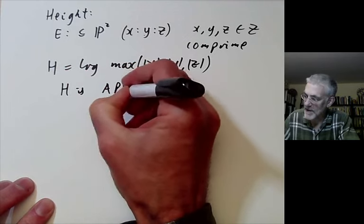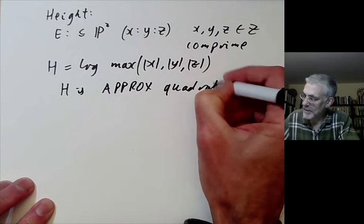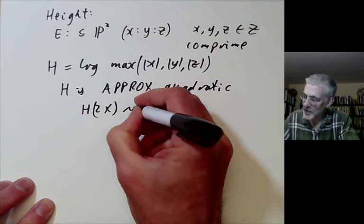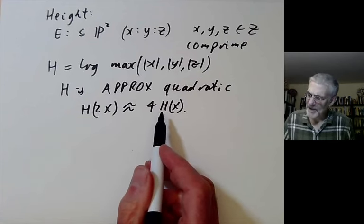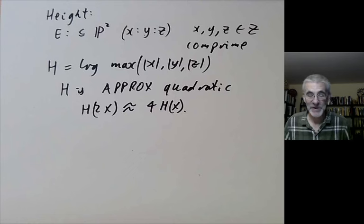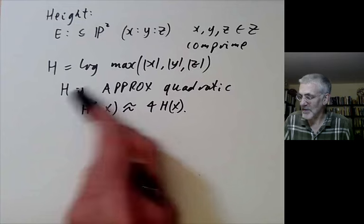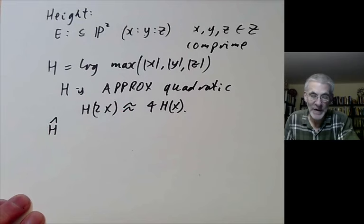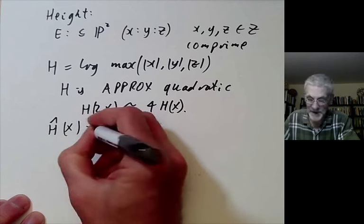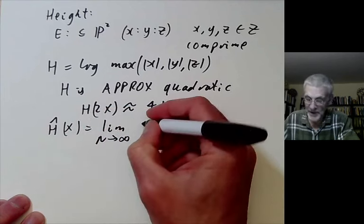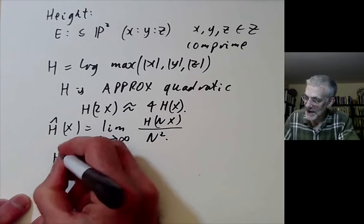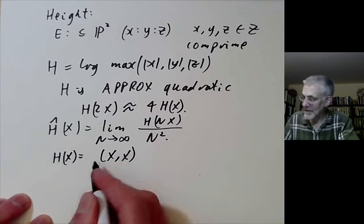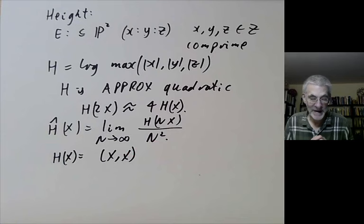This isn't quite the height we really want. So h is approximately quadratic. In particular h of 2x is approximately 4h of x. You can actually work with this approximately quadratic function, which is what Mordell originally did. It makes the argument a little bit fussier, because you need to keep track of what the error terms are. Tate noticed that you can make it exactly quadratic by averaging it. You define h hat of x to be just the limit as n tends to infinity of h of 2^n x over 4^n. Then h hat of x just turns out to be the inner product of x with itself for a suitable bilinear form.